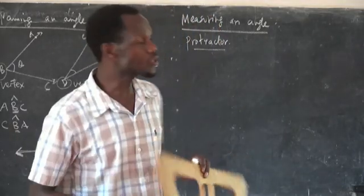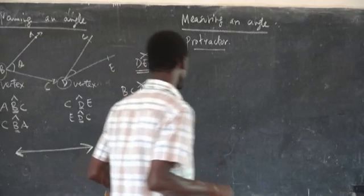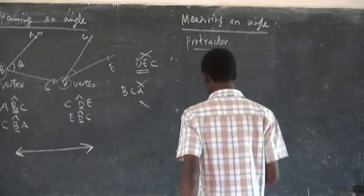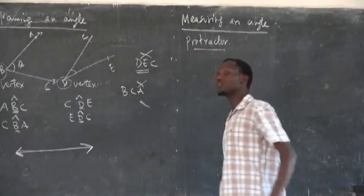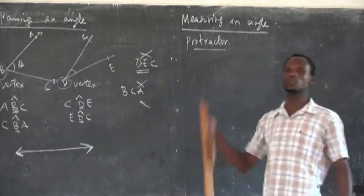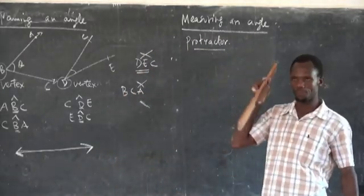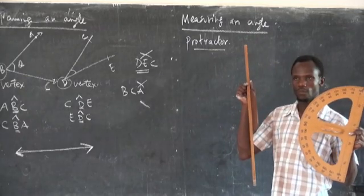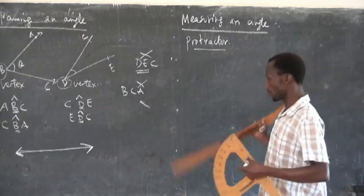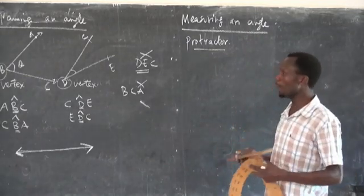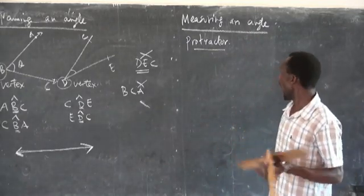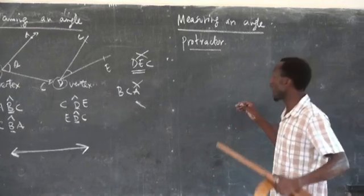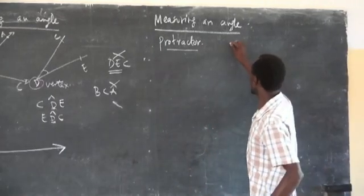Also, you cannot measure an angle without using a ruler. You should have a ruler. Now, for example, I want to measure an angle.